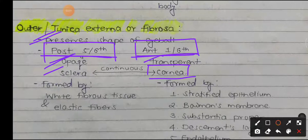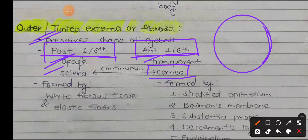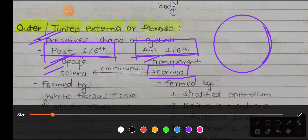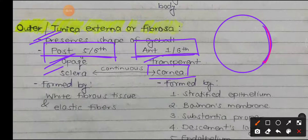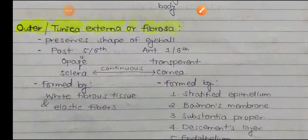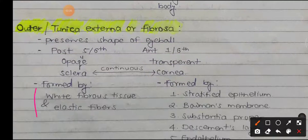To visualize this, if we draw the eyeball, the anterior part is our cornea, through which light enters, so it has to be transparent. The posterior five-sixths is the sclera, which is opaque and whitish in appearance. The sclera is formed by white fibrous tissues and elastic fibers.